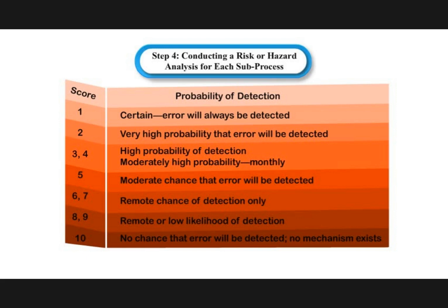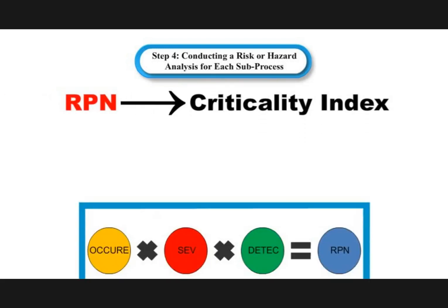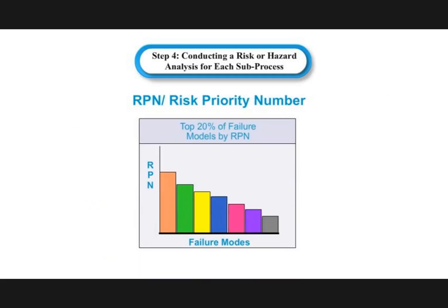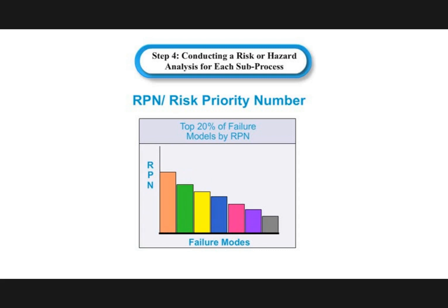The team also focuses on the probability that a failure mode will be detected. The higher the ranking on a scale of 1 to 10, the less likely it is that a failure mode will be detected. The risk priority number, also referred to as the critical index, is a quantitative measure used to evaluate and assess a failure mode. The RPNs are ranked to allow prioritization of failure modes and to highlight those that exceed acceptable limits and should therefore be targeted for change.